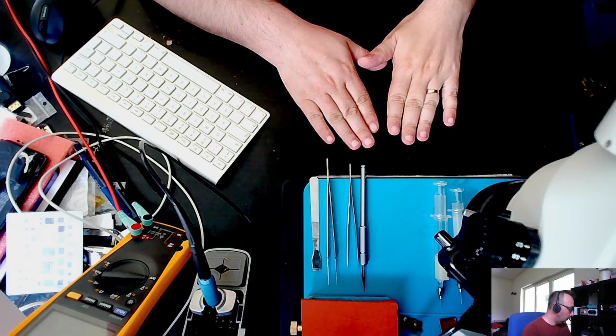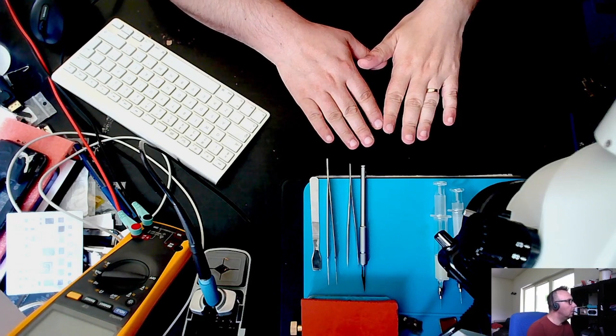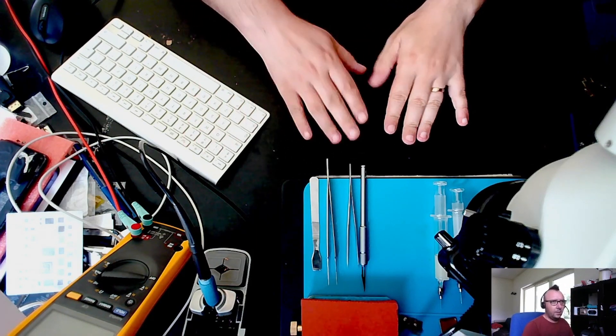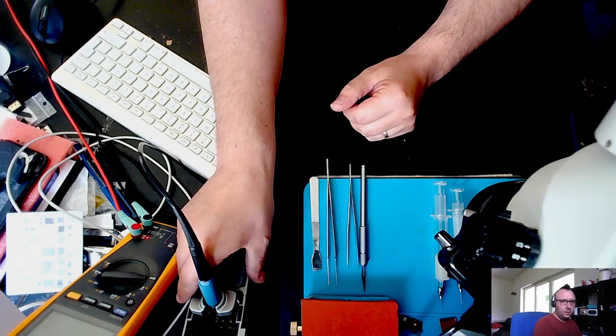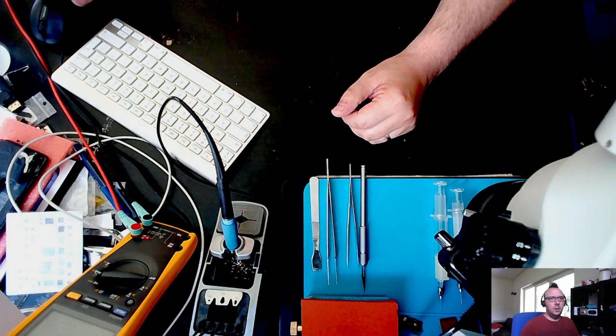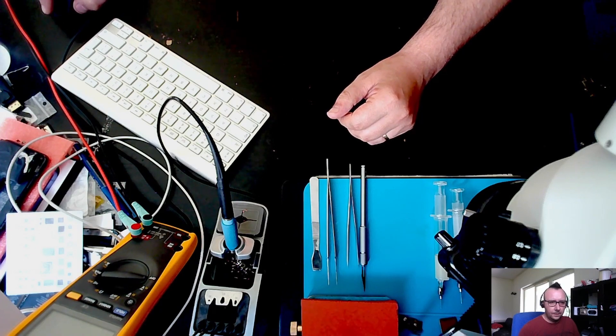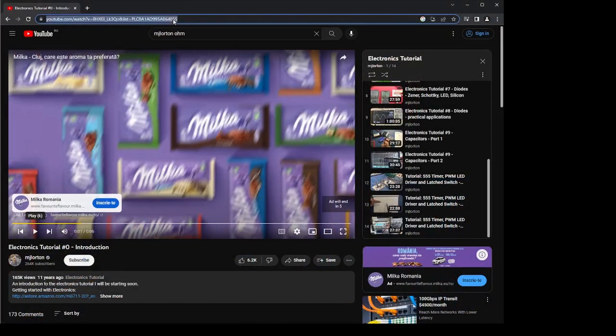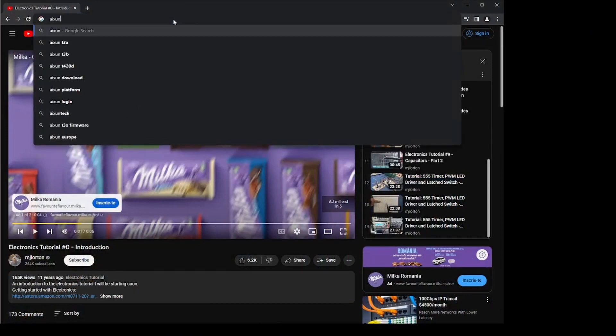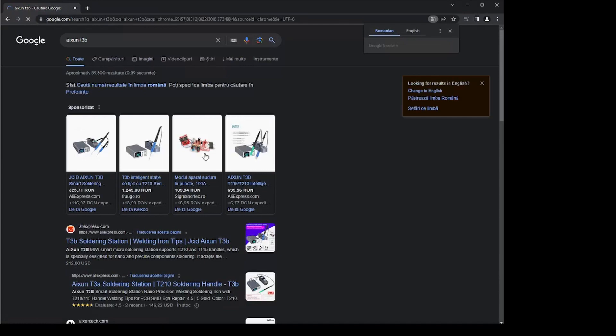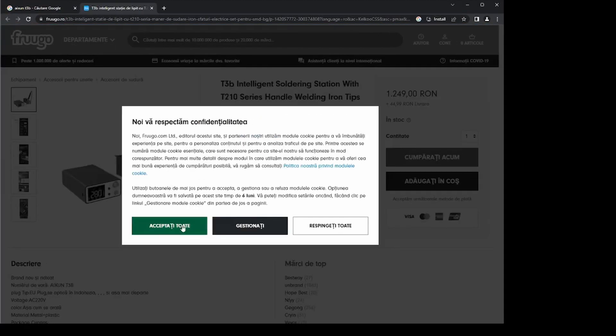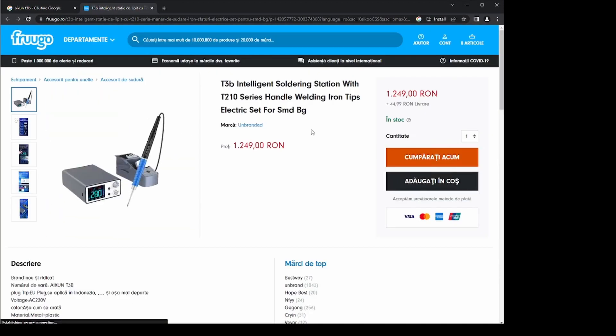Next thing, I think we can go to the soldering part. For soldering, I use the Atten T3B, I think it's called. Let me share with you this screen. This is the station that I use. It's the T3B Atten station. You can find it cheaper than you can see it here in this screen.